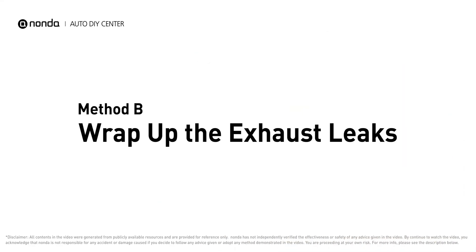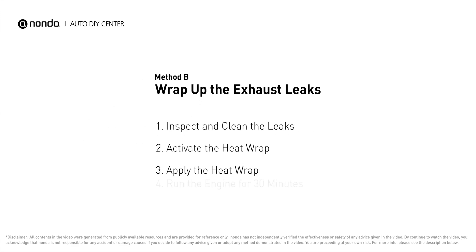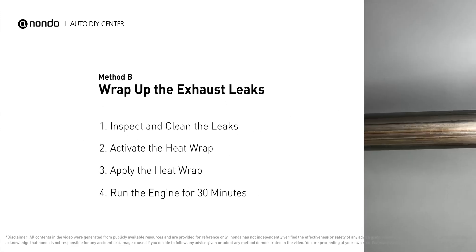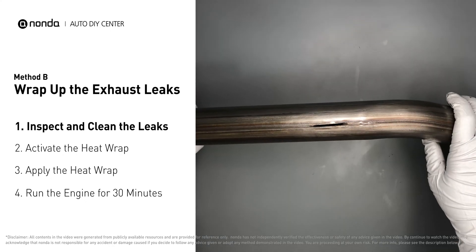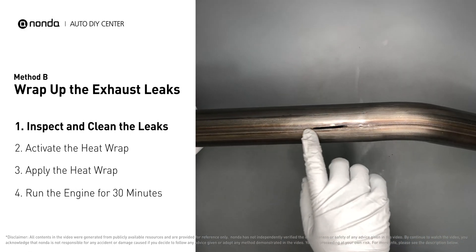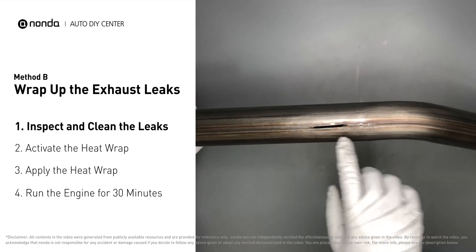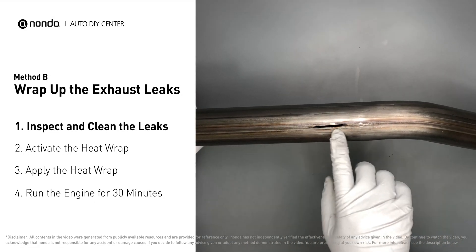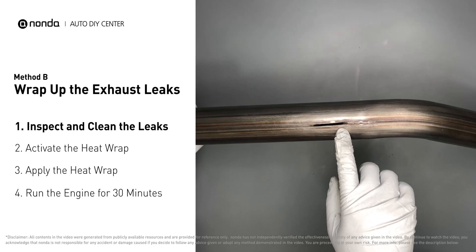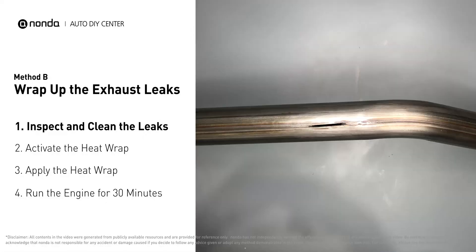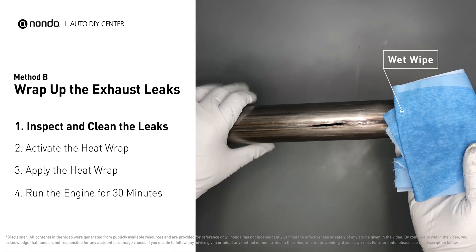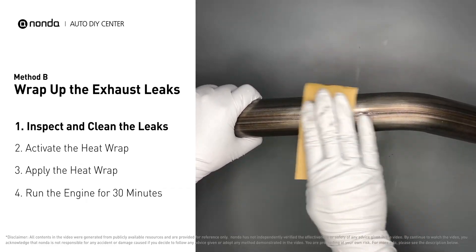Method B: wrap up the exhaust leaks. Exhaust pipes are made out of rolled steel, and there is a welded seam on them. Like this one — the seam will often rot and leak. First, get sandpaper and a wet wipe to clean the leaking area for better application.